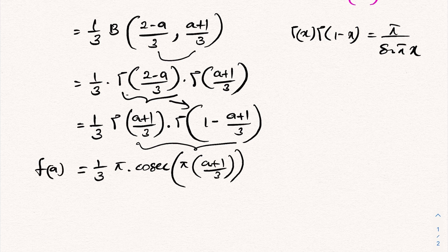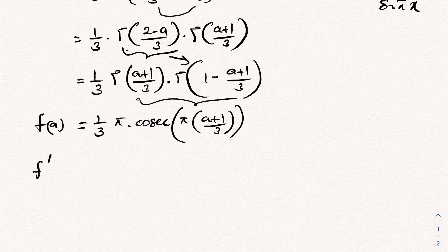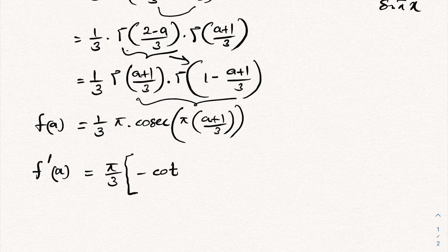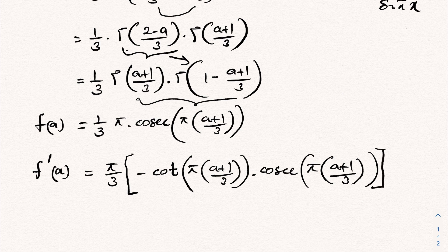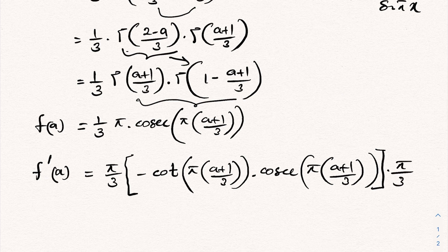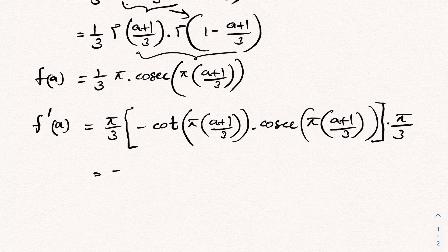Now I'm going to differentiate with respect to a. So f'(a) equals pi over 3, and differentiating the cosecant function gives minus cotangent of pi(a plus 1)/3 times cosecant of pi(a plus 1)/3, multiplied by pi over 3. Simplifying, we have minus pi squared over 9 times cotangent of pi(a plus 1)/3 times cosecant of pi(a plus 1)/3.